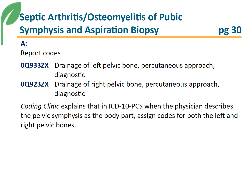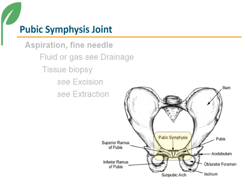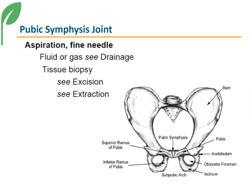Coding Clinic explains that in ICD-10-PCS, when the physician describes the pubic symphysis as the body part, one assigns codes for both the left and right pelvic bones, as there is no specific body part value for drainage of the pubic symphysis joint. The pubic symphysis lies midline to the right and left pubic bones, as seen in this diagram. In the ICD-10-PCS index, at the main term aspiration, subterm fluid or gases, the coder is instructed to see the root operation drainage.